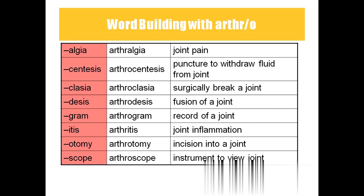Arthroclasia means surgically breaking a joint. And arthrodesis — desis means fusion. If we are fusing a joint intentionally, then it is arthrodesis. Arthrogram means record of a joint.